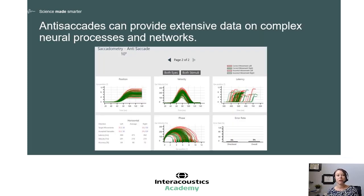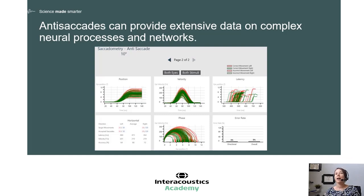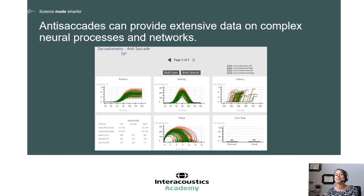This is an example of the summary screen that you get in saccadometry testing. You'll notice it's a lot more extensive than what you get in random saccade tests, because it's looking at more neural networks of the brain. There are new measurement parameters that you may not be used to looking at. Next, I'm going to review how to read this data and what central disorders you may see that affect certain measurement parameters.